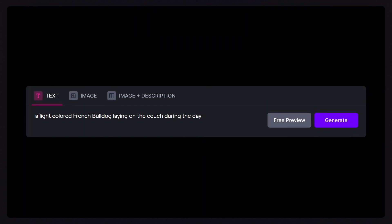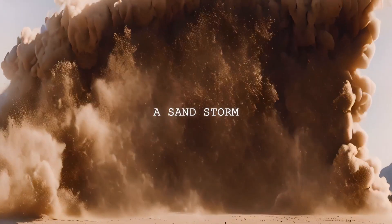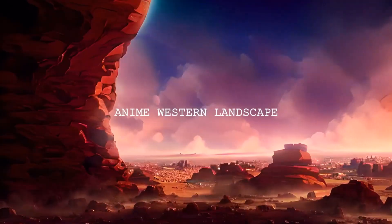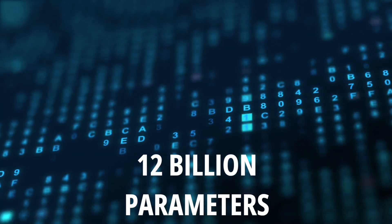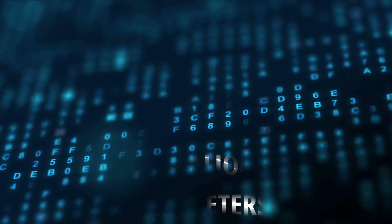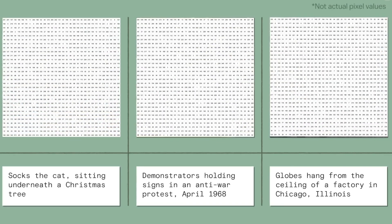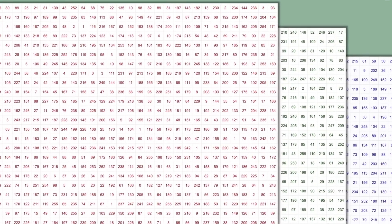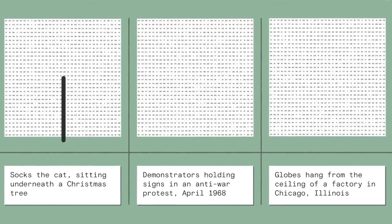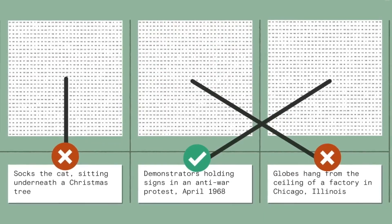You can input a simple sentence, and it will astound you with stunning images — no hacks or tricks required. This AI powerhouse boasts a staggering 12 billion parameters, making it a force to be reckoned with. It's trained to generate images from text descriptions using a vast dataset of text-image pairs. It's like having an AI artist who can transform your ideas into visual masterpieces.